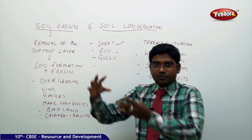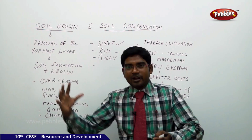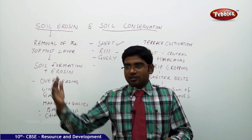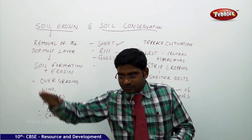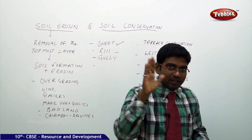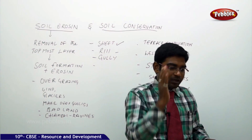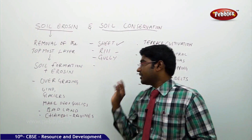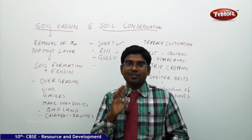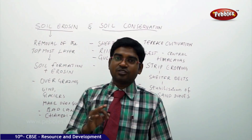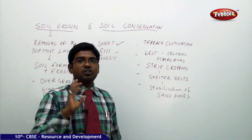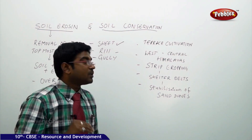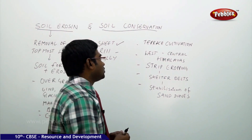When erosion makes big holes and causes the land to go up and down repeatedly, that results in gully erosion. So we have three major categories of soil erosion: sheet erosion, rill erosion, and gully erosion.